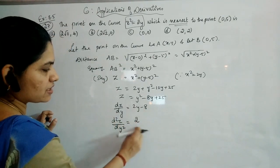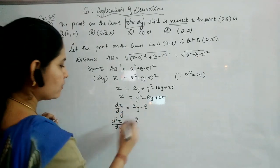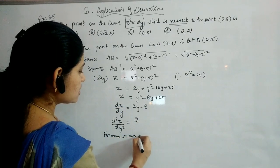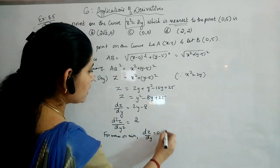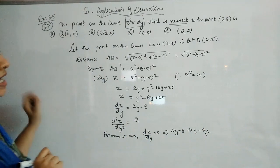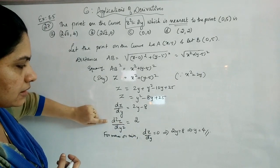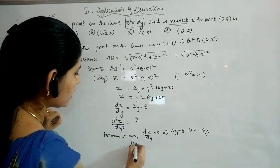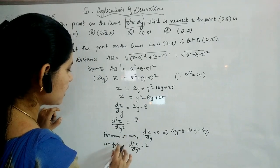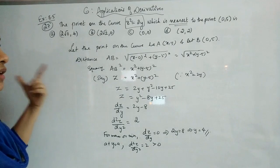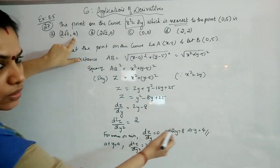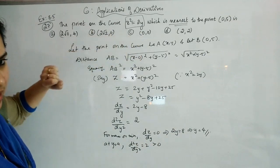After finding the point, we equate the first derivative to 0: 2y - 8 = 0, giving y = 4. At y = 4, the second derivative equals 2, which is greater than 0, confirming this is a minimum. Looking at the 4 options, since y = 4 appears in the options, we can identify the answer directly without finding x.